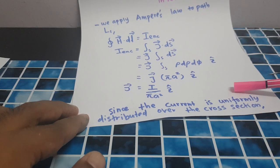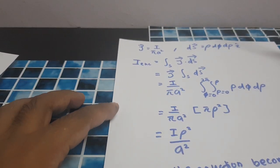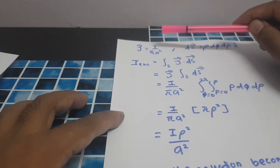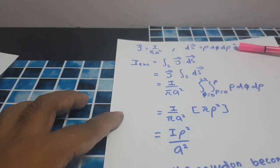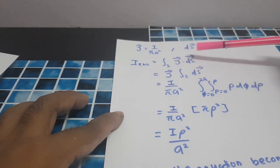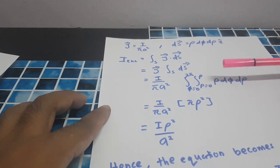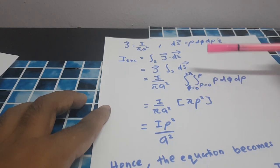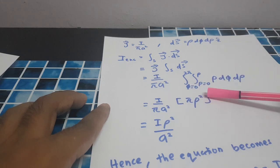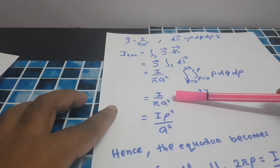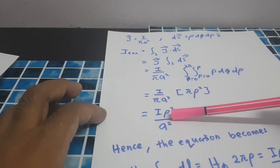Since the current is uniformly distributed over the cross section, we need to find I enclosed in terms of radius A and radius ρ. We know J equals I / (πA²), and dS equals ρ dρ dφ. So I enclosed equals the integral of J·dS with ρ from 0 to ρ and φ from 0 to 2π. Integrating gives πρ² and J is I / (πA²), so I enclosed equals I·ρ² / A².